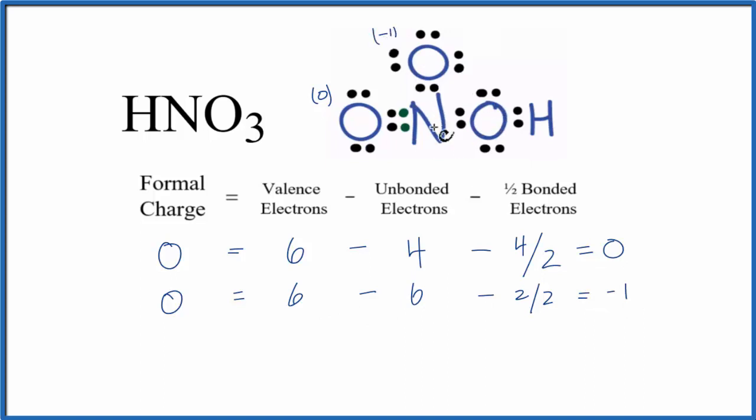Let's do the nitrogen next. Nitrogen is in group 15, so it has 5 valence electrons. Subtract the unbonded - all of these valence electrons here are involved in chemical bonds. So we have 0 minus one-half of the bonded: 2, 4, 6, 8. 5 minus 4, that's a positive 1. So the formal charge here is plus 1.